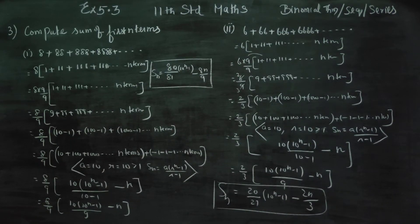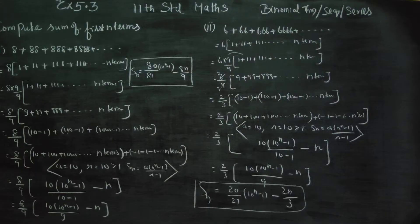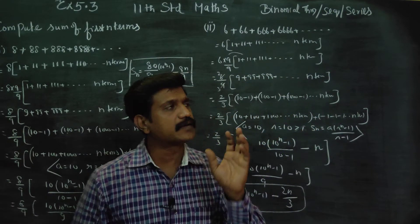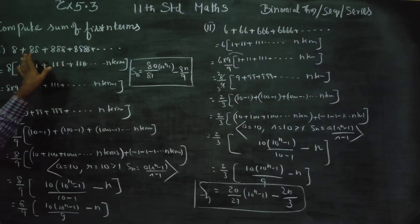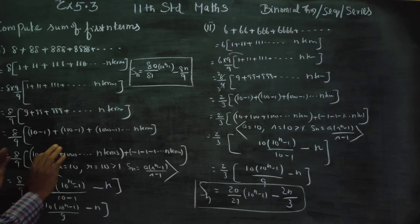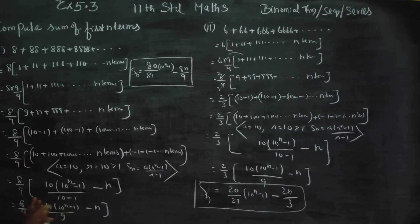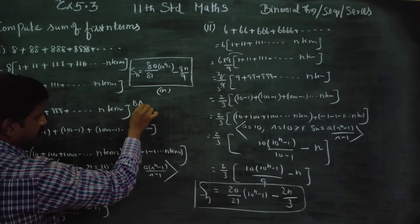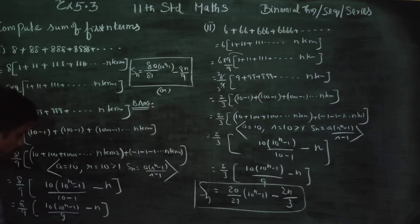Multiply through by 2 by 3 to finish the final stage of the sum. This is the book answer — refer to the book answer. You will have this style, and the answer is 1 by 9.